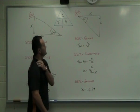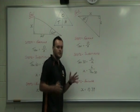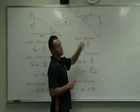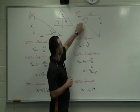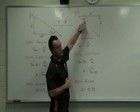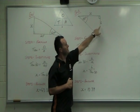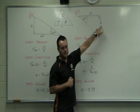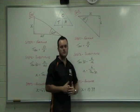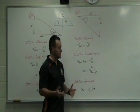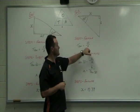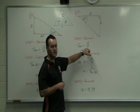Let's look at the next example, nice and simple. The first rule always is have a look at the angle. We have an angle of 30 degrees in this right angle triangle. We're given the opposite side this time, and the unknown is on the adjacent. So start with the formula: tan is equal to opposite over adjacent.